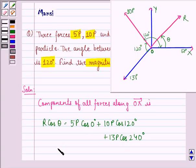This is equal to 5p plus 10p times minus one-half plus 13p times minus one-half, and that is equal to minus 13p over 2.